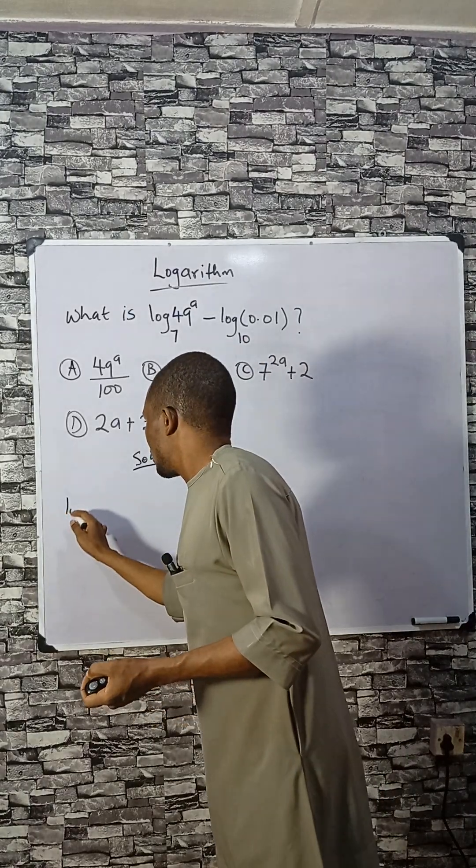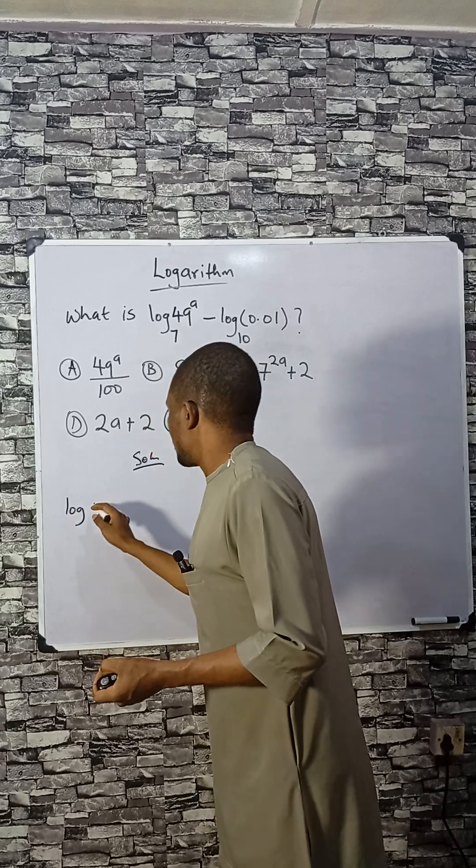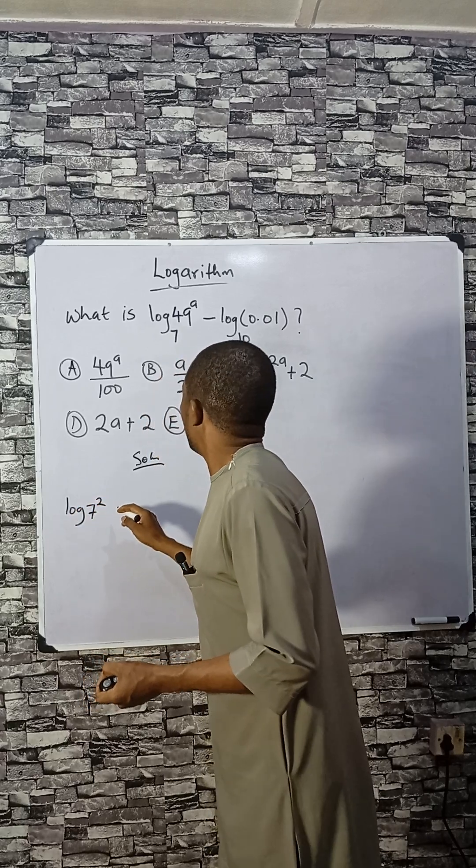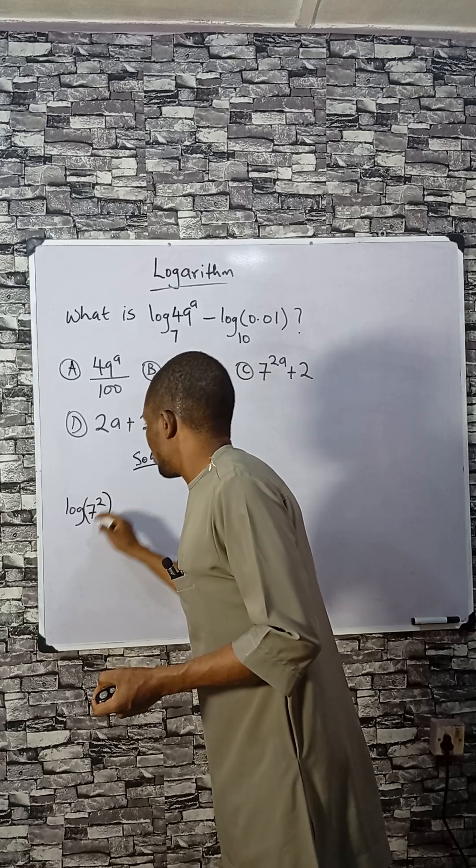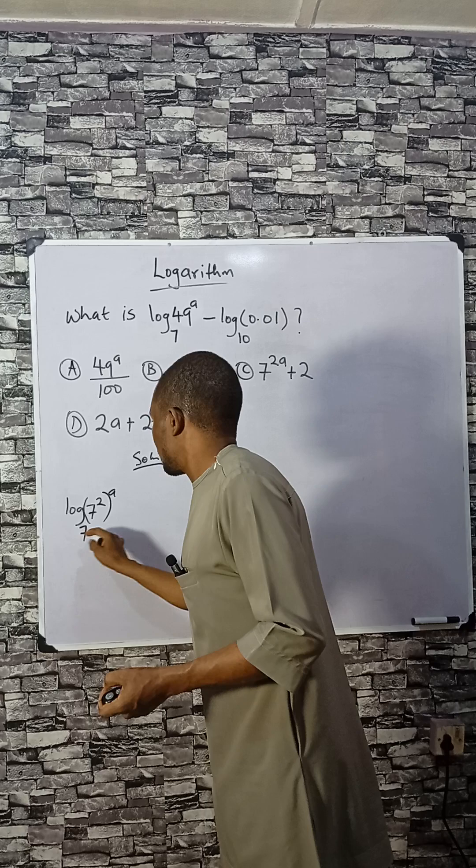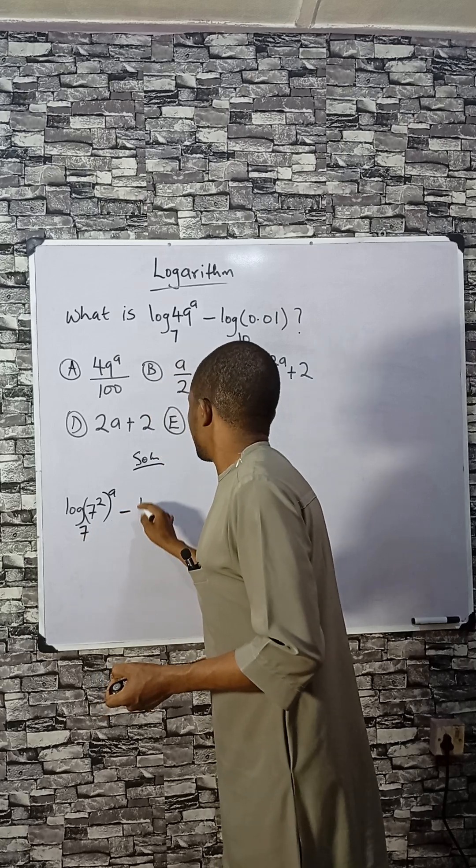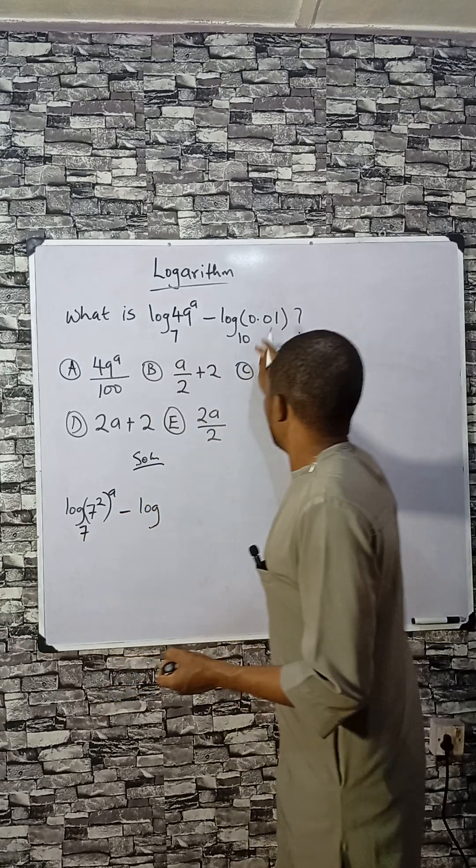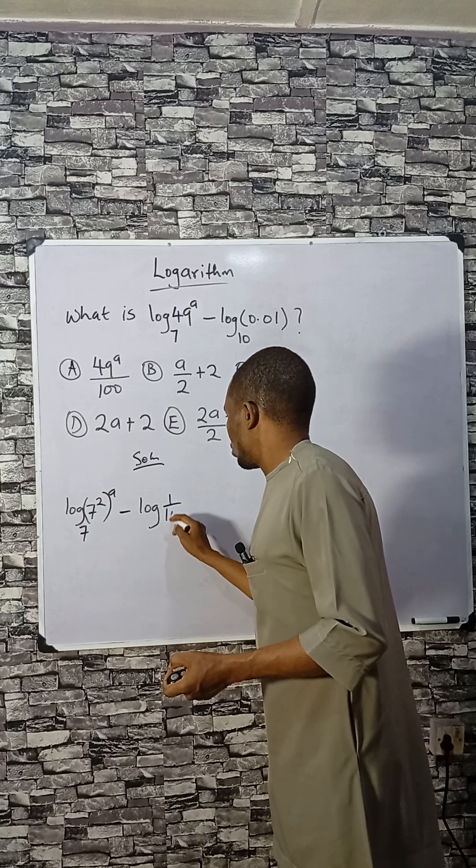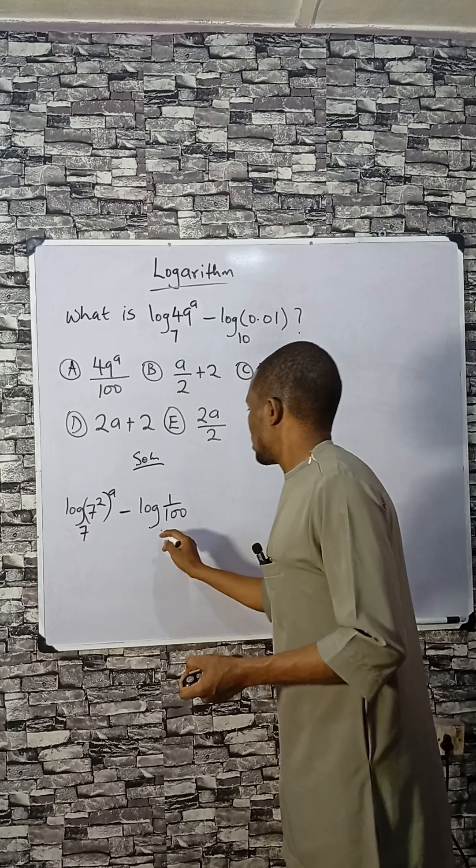Let me try this one. Log 49 - 49 is 7 raised to power 2, then raise to a, that is on top there, base 7, minus log 0.01 is same thing as 1 divided by 100, base 10.